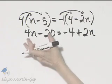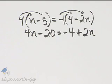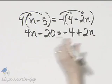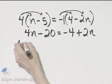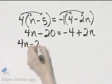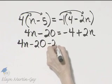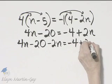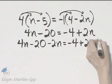These are unlike terms. These are unlike terms. Let's go ahead and use our addition property and let's write variable terms on one side, constants on the other side. I'll begin by subtracting 2n from both sides. So I'm simply going to rewrite my left side and I'll subtract 2n. I'll rewrite my right side and I'll subtract 2n.